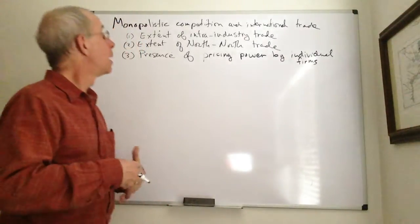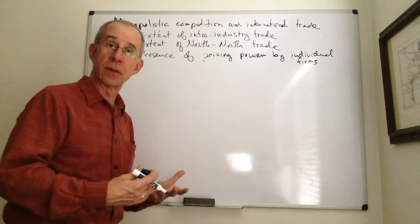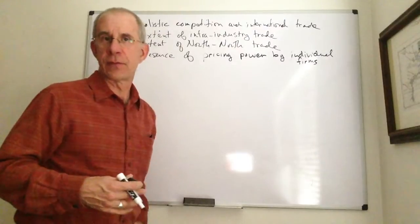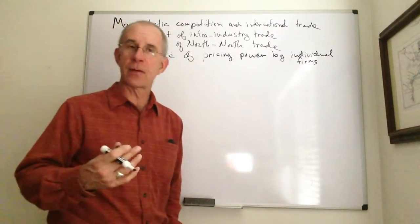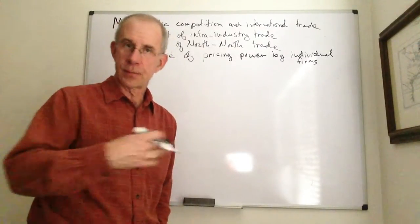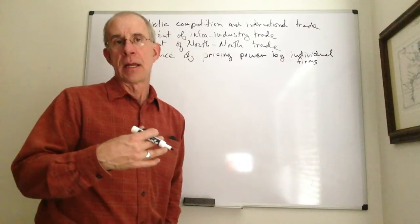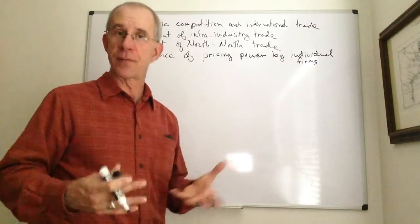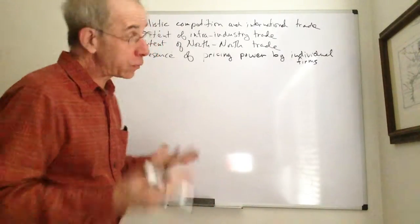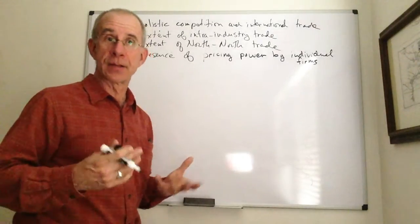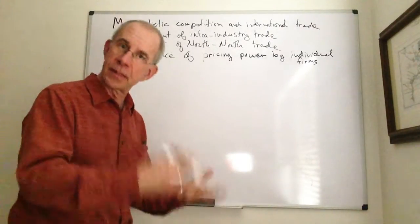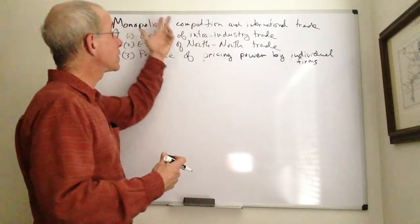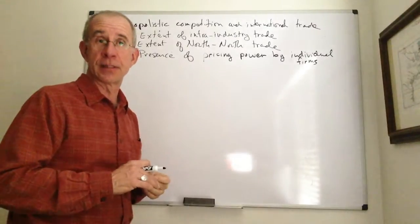So we need other models to explain those behaviors. And also, the reality is that a lot of individual firms have pricing power, the ability to help set the prices by choosing the quantity, that is not really consistent with a perfect competition model. Instead, economists come up with a different set of models to explain a different set of relationships. And one of the standard ones is monopolistic competition.